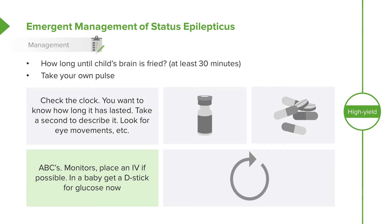It's important to keep track of the ABCs. This is a common trick test question where they ask a complicated scenario and the real answer is ABCs. Remember your basic CPR. Place monitors on the child. Place an IV if you can, but you can actually reverse a seizure without an IV. In a baby, always get a D-Stick or a dextrose level, because low glucose is a common cause for a child having a seizure and may indicate either a metabolic disorder or a prolonged fasting state.